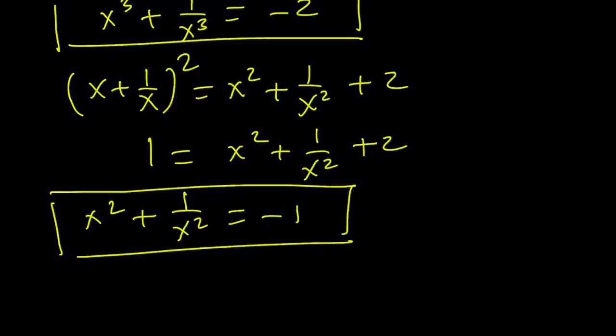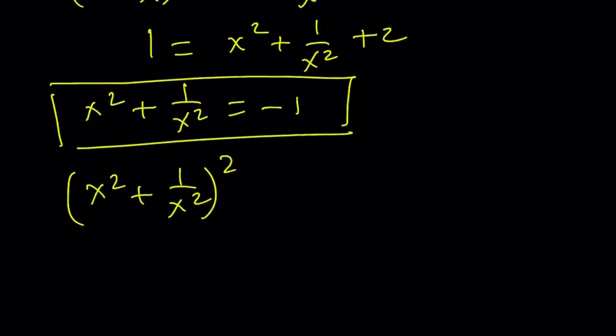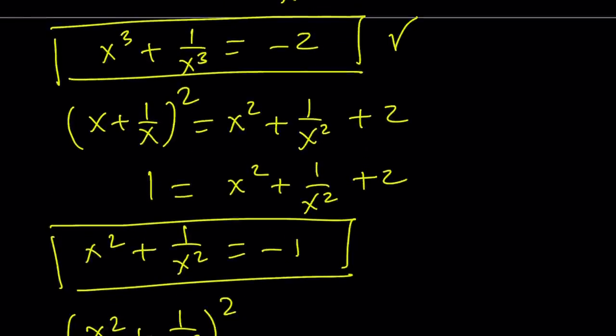So we got those two values. What am I going to do with that? I'm going to take x squared plus 1 over x squared and square it one more time. Let me tell you what my goal is. I got x cubed plus 1 over x cubed, and I want to get x to the 4th plus 1 over x to the 4th. And I want to multiply those together. From there, I'm hoping to get x to the 7th plus 1 over x to the 7th. And you actually get that. I checked it for you.